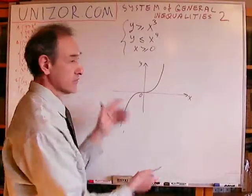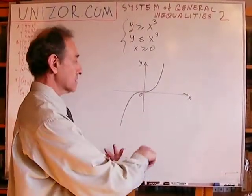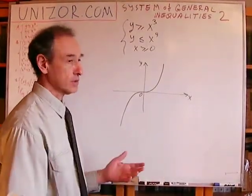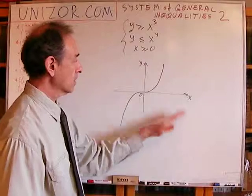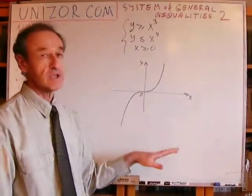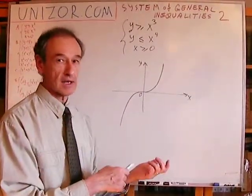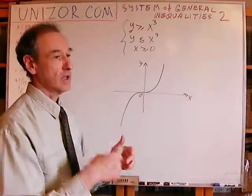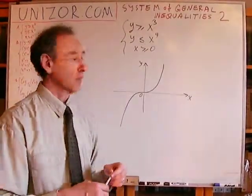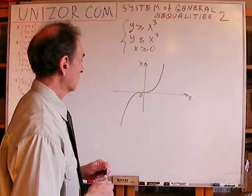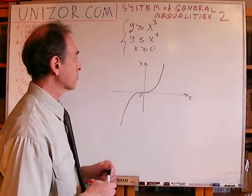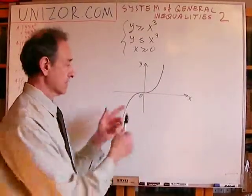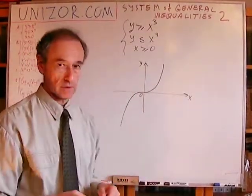Outside of this curve, Y is either less than or greater than X cubed. What's important is that one part is completely devoted to one side of the equation, like less than. And another is completely filled up with points where Y is the opposite — if this is less, this is greater than X cubed.